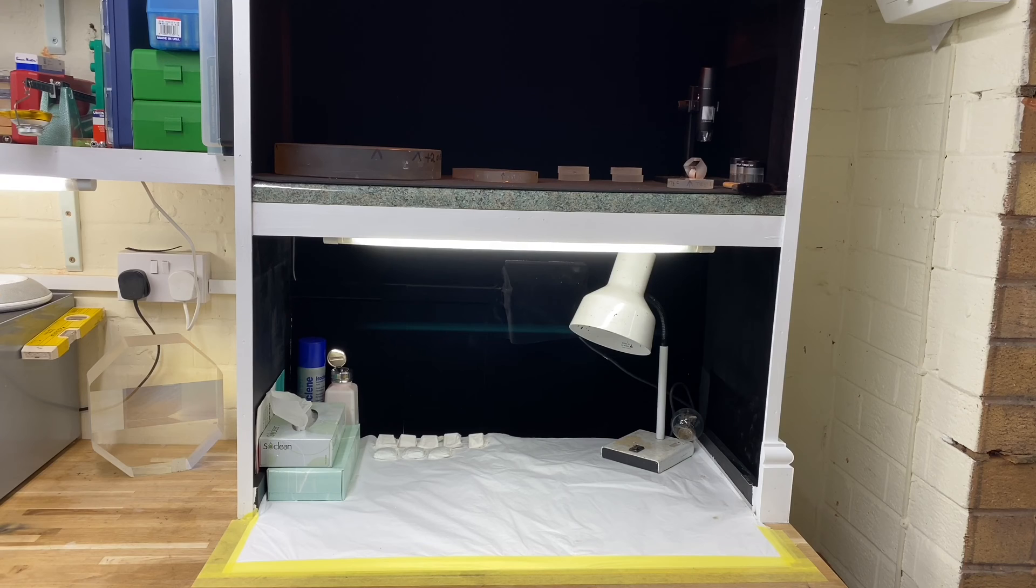It's dual purpose, so it's got a monochromatic section at the top which I use for measuring the flatness of the surfaces, and on the bottom I use it for inspecting the surface quality.